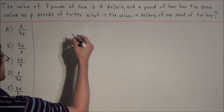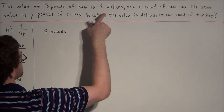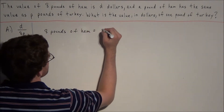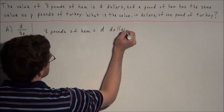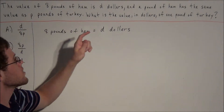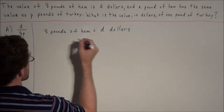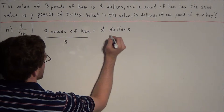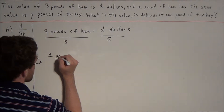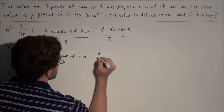We start off with the information given to us. We know that 8 pounds of ham cost d dollars, so we can say 8 pounds of ham equals d dollars. The next piece of information is a pound of ham has the same value as p pounds of turkey, so we need to find out how much one pound of ham costs. If 8 pounds of ham is d dollars, then dividing both sides by 8, 1 pound of ham equals d over 8 dollars.